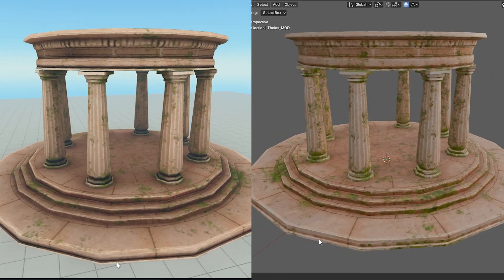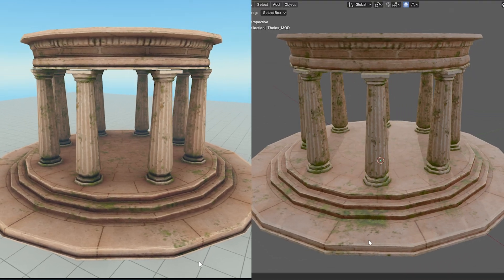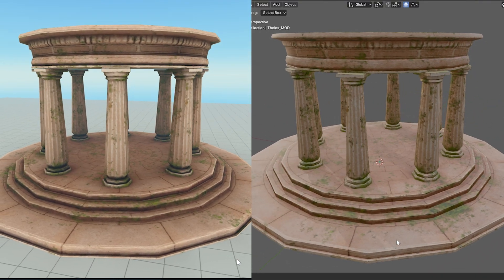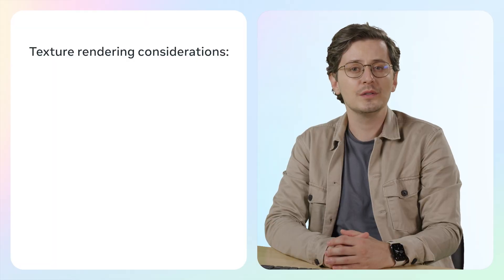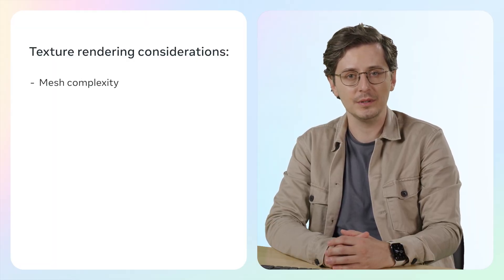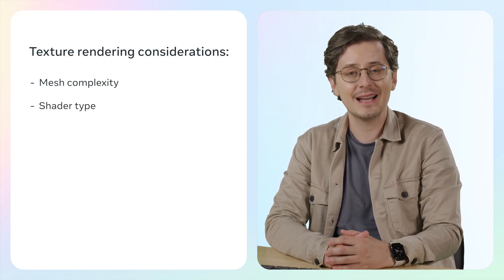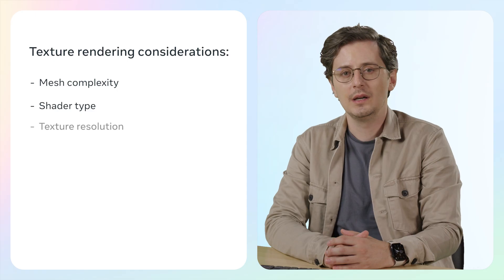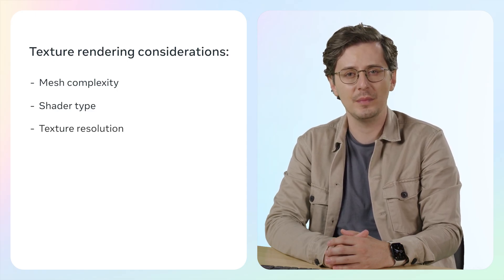When you import textured models into worlds, you might notice that they look different compared to how they appeared in your modeling software. This is due to how global illumination, or GI, is calculated in worlds. GI is the process of applying light to the geometry of your world and calculating how that light bounces off surfaces to create indirect lighting. In worlds, GI is performed by calculating how light bounces off surfaces based on their reflectivity. There are several factors that can impact rendering time and lighting quality: models with a high number of vertices and polygons will take longer to render; the material shader used can affect how the model reacts to light; and high resolution textures provide more detail but require more processing power to render.